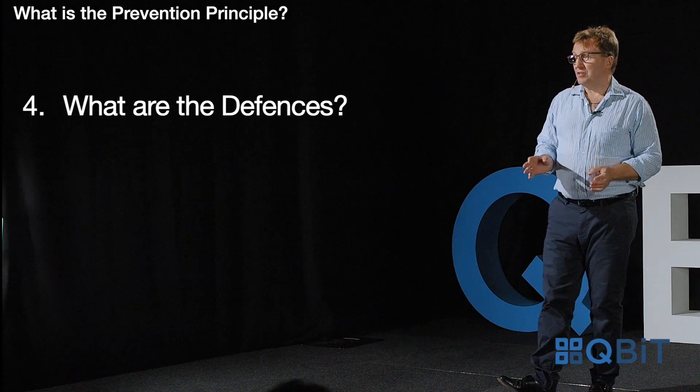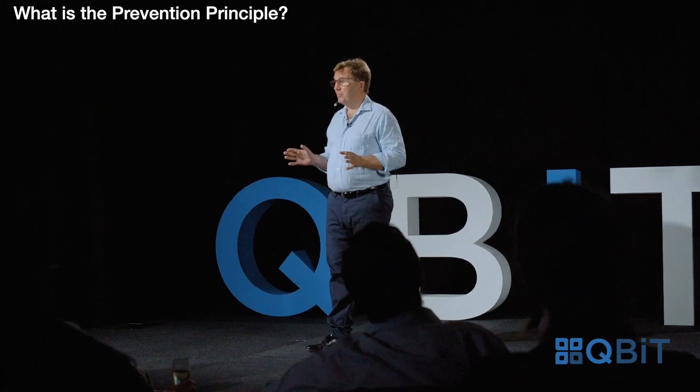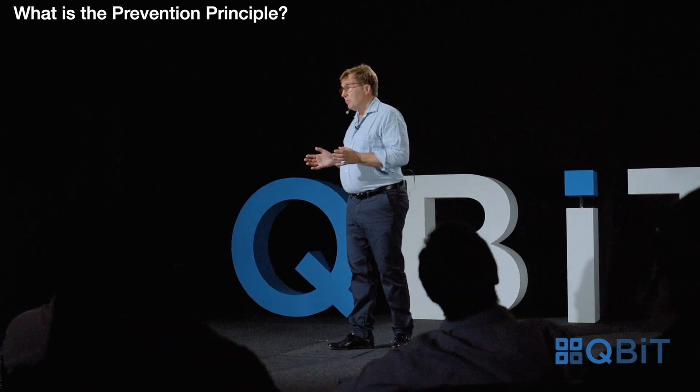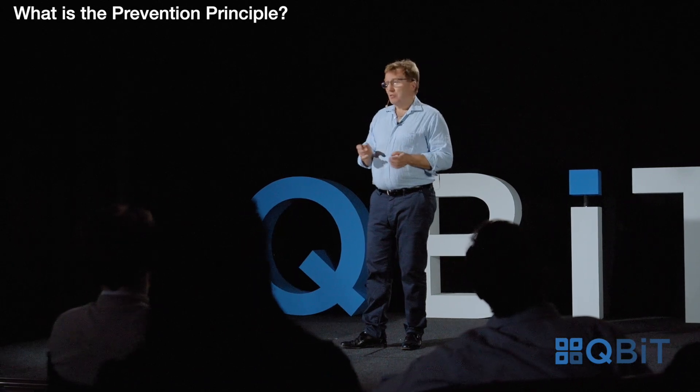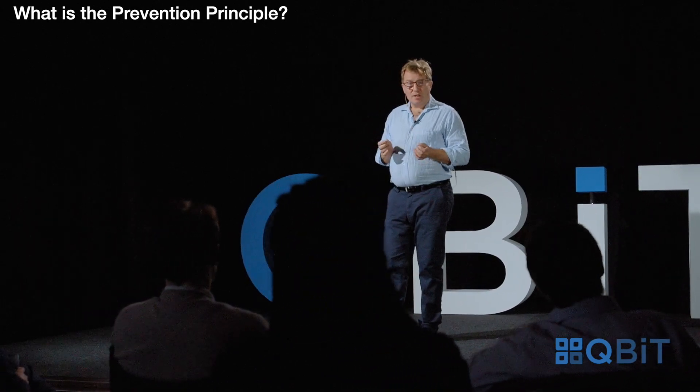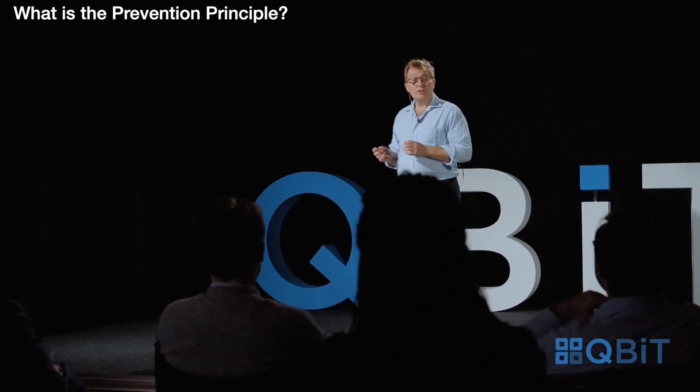What are the potential defences? First, on the proper construction of the contract, the party in default may be found to have agreed to perform even if the other party has hindered or prevented that performance. Secondly, the application of the prevention principle may be excluded by the terms of the contract, and that can arise in two ways: the relevant act may be expressly dealt with by the terms of the contract so there's no need for an implied term; or there may be a term which excludes or restricts reliance on the prevention principle — though you need clear and unambiguous language if the contract is to have that effect.